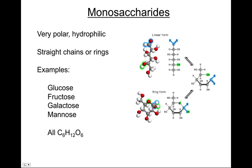Monosaccharides can be found in six-carbon straight chains, or sometimes they fold back on themselves in the form of rings — roughly a hexagon shape. Glucose, fructose, galactose, and mannose are all monosaccharides. They all have six carbons, 12 hydrogens, and six oxygens. So why would there be four different names for molecules that all have the same formula — C₆H₁₂O₆?